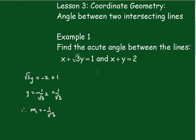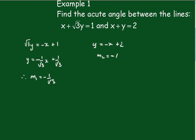Another one, we have y is equal minus x plus 2, so m2 equals minus 1. Now the formula is the tan of theta is equal to m1 minus m2 over 1 plus m1 m2.